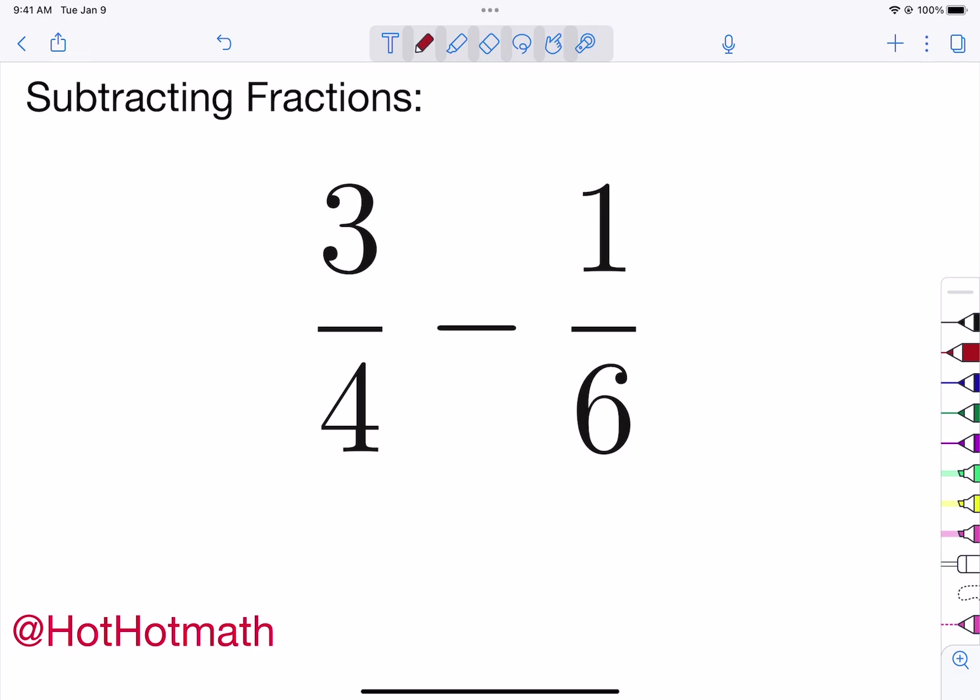Now we're looking for something that is called a least common multiple. So we are looking for numbers that both four and six will divide evenly into. If we look at the number four and we just start writing down four, eight, twelve, sixteen, just numbers that are multiples of four.